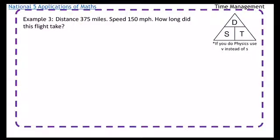Okay, so example 3. Distance is 375 miles. Speed is 150. How long did the flight take? It should say how long did the flight take in hours and minutes. But we'll get to that in a second. So looking for time. So T equals D over S.